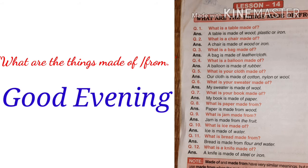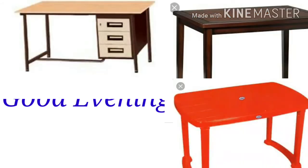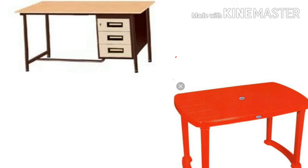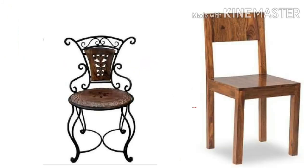What is a table made of? A table is made of wood, plastic or iron. What is a chair made of? A chair is made of wood or iron.